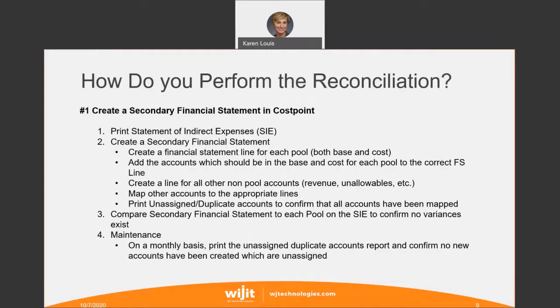How do you perform the reconciliation? There are two ways. The first is to create a secondary financial report in Cost Point, and the other is a quick reconciliation method. To create a secondary financial statement of indirect rates, you're going to create a financial statement line for each pool — both your base and your cost — and then add the accounts which should be in the base and costs for each pool to the correct financial statement line.